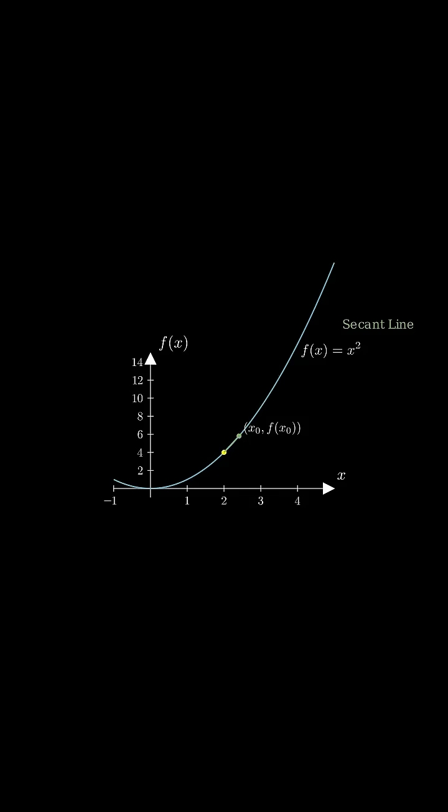We slowly bring the second point closer to the first one. As the points move together, the secant line rotates and becomes a tangent when the second point nearly merges with the first point.